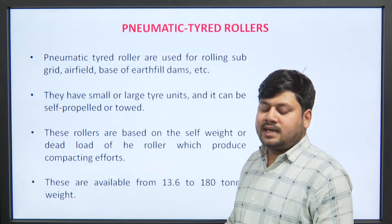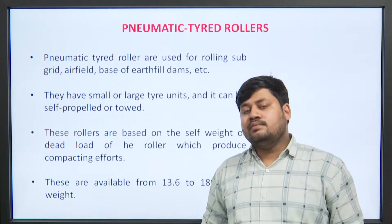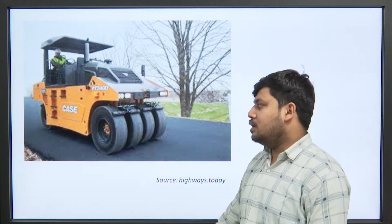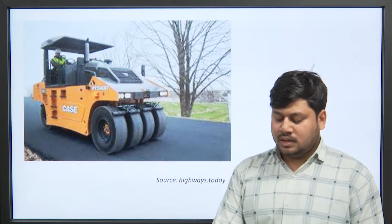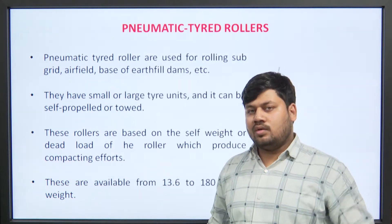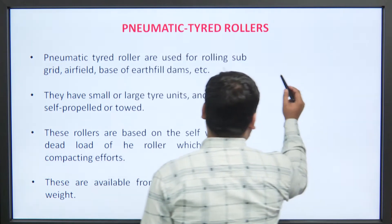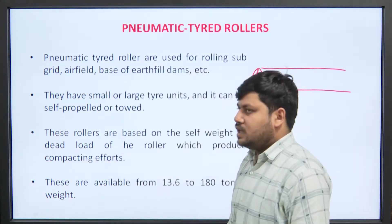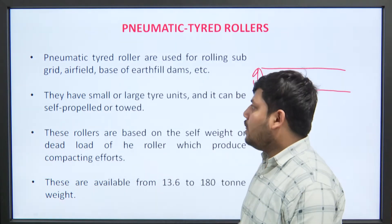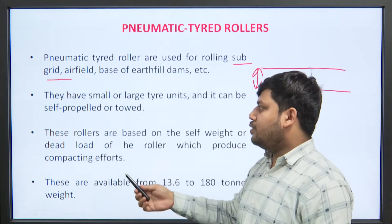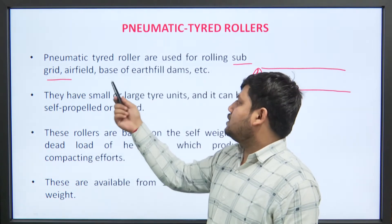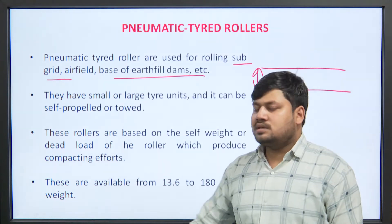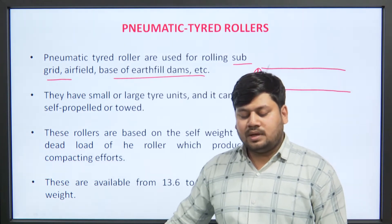The third type of roller is the pneumatic tire roller. What is a pneumatic tire? It is a simple rubber tire, but it has a large number of tires. This is a simple picture of a pneumatic tire roller. This type of roller is used for jobs in which the depth of the soil layer is small. It can be self-propelled or towed.